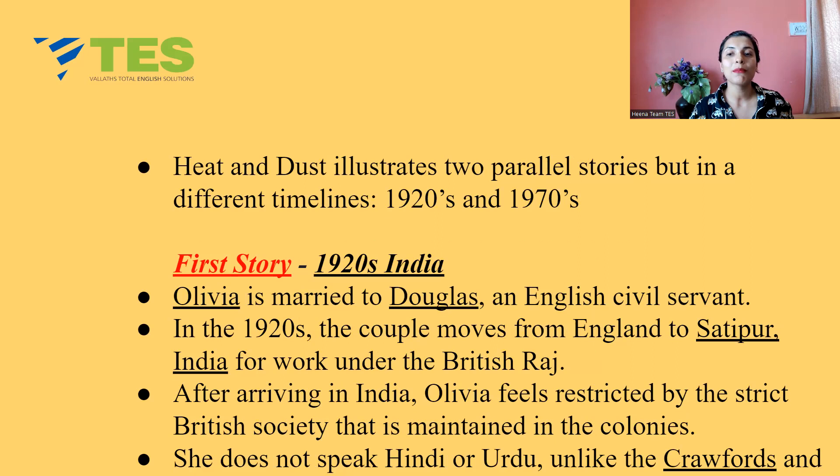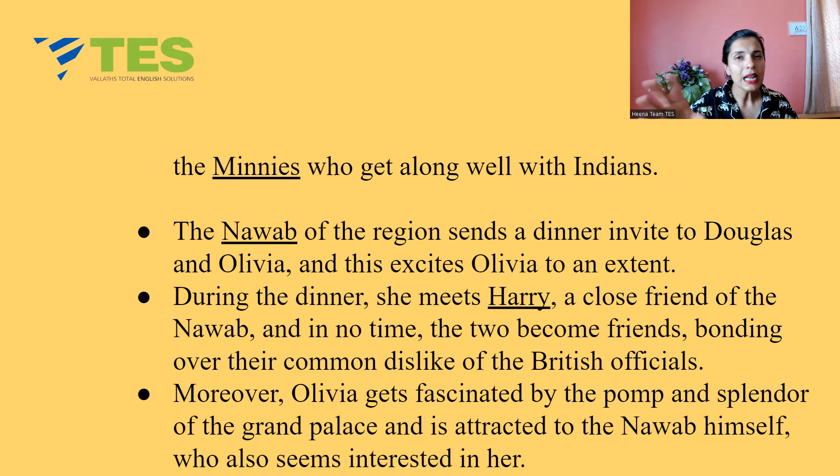The protagonist is Olivia, who is married to English civil servant Douglas, and they've moved to India. But Olivia is not very fond of India. She does not know the language, although other colleagues — the Crawfords and Minis — understand and even speak Hindi and Urdu, which makes it easy for them to stay in India.